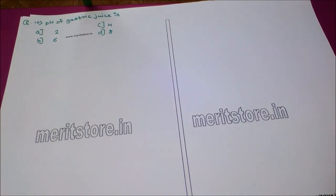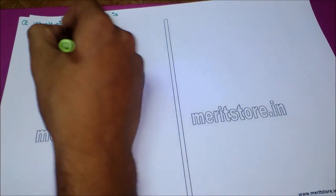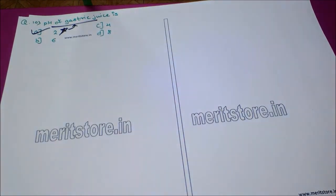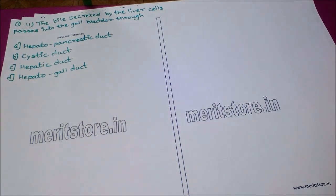The next question: the pH of gastric juice is — option A: 2, option B: 4, option C: 6, option D: 8. The correct answer is option A, which is 2. This is a numerical value to remember — the pH of gastric juice is 2.